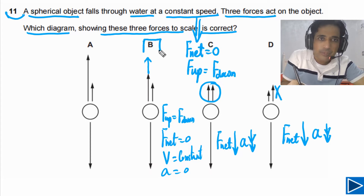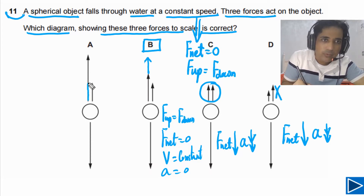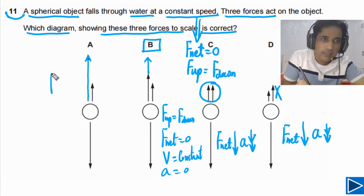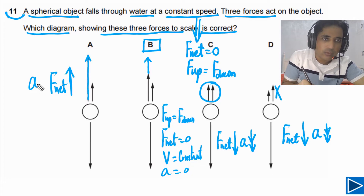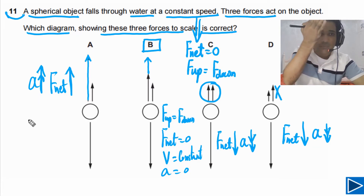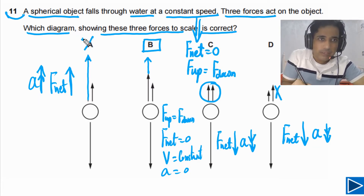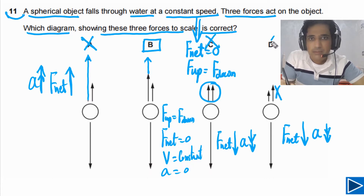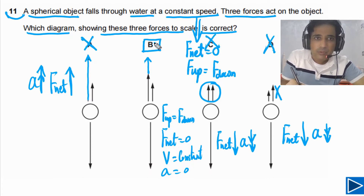So option B can be the answer. For option A, the upward arrow's length is almost equal to the combined upward arrows, meaning there is a net force upwards and there is acceleration acting upward — so the spherical object is accelerating upwards. So A is not a possible answer, C is not a possible answer, D is not a possible answer. The best possible option for this question is B.